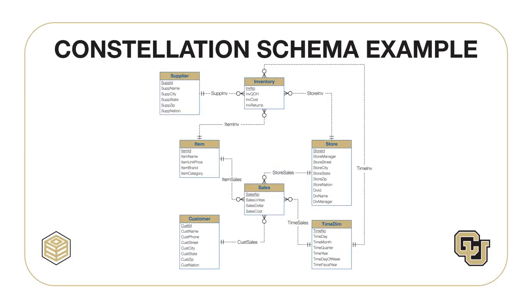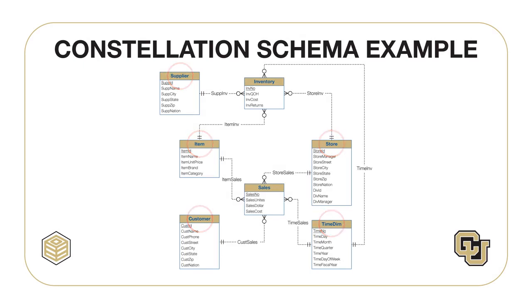The previous star schema only represents a data cube for sales tracking. Additional star schemas may be required for data cubes involving other types of sales, inventory, and shipping. For related business processes that share some of the dimensions, a star schema can be extended into a constellation schema with multiple fact entity types. This constellation ERD diagram contains two fact entity types — sales and inventory — along with five dimension entity types shared among the fact entity types. The constellation pattern is important because it shows shared dimensions to represent multiple data cubes.